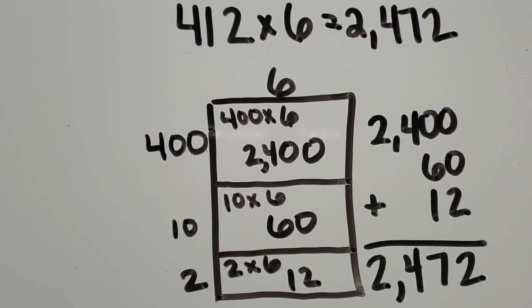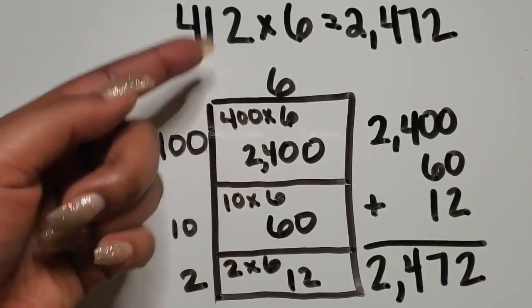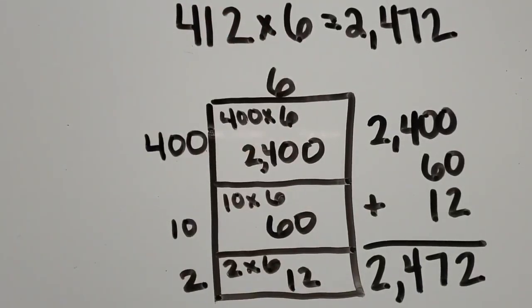We multiplied a one-digit number by a three-digit number, then a three-digit number by a one-digit number using the area model.